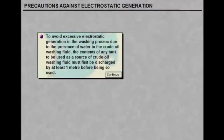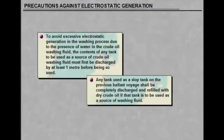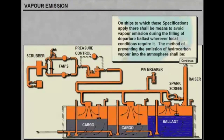To avoid excessive electrostatic generation in the washing process due to the presence of water in the crude oil washing fluid, the contents of any tank to be used as a source of crude oil washing fluid must first be discharged by at least 1 metre before being used. Any tank used as a slop tank on the previous ballast voyage shall be completely discharged and refilled with dry crude oil if that tank is to be used as a source of washing fluid.